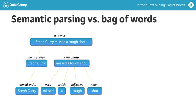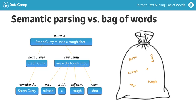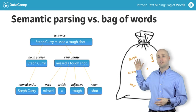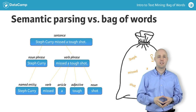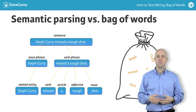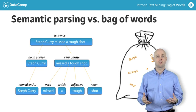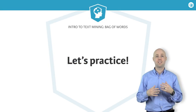In contrast, the bag of words method doesn't care about word type or order. Here, words are just attributes of the document. In this example, we parse the sentence 'Steph Curry missed a tough shot.' In the semantic example, you see how the words are broken down from the sentence to the noun and verb phrases, and ultimately into unique attributes. Bag of words treats each term as a single token in the sentence, no matter the type or order. For this introductory course, we'll focus on bag of words, but we'll cover more advanced methods in a later course. Let's get a quick taste of text mining.